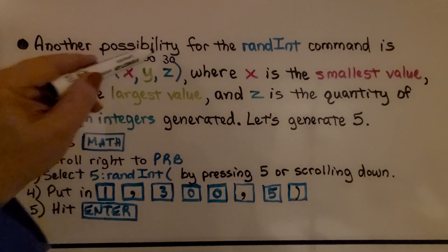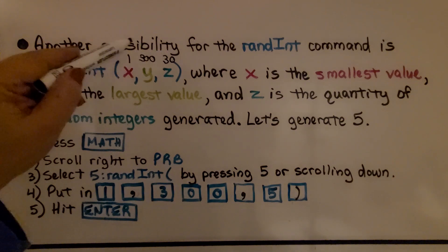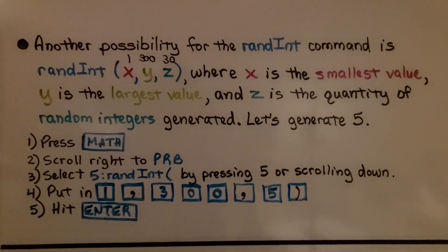So we would put 30 if we had least, greatest, and 30 random numbers. So let's generate 5.